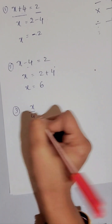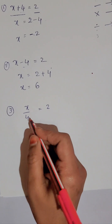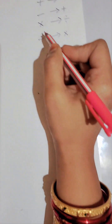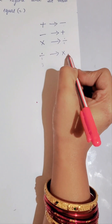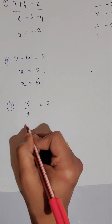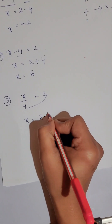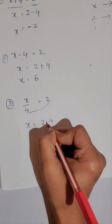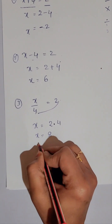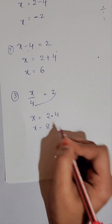Next example: x divided by 4 is equal to 2. As already discussed, division becomes multiplication when it moves across the equals sign. So the 4 moves to the right side and becomes multiplication: x = 2 × 4. This dot indicates multiplication, so x = 8.